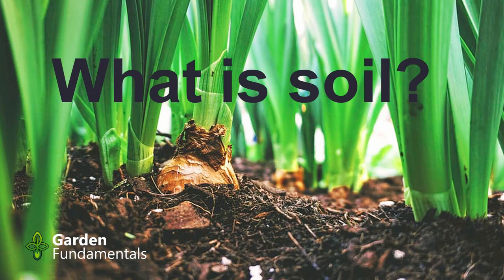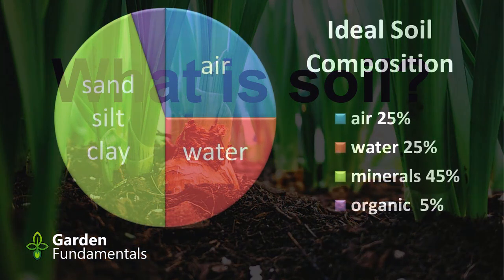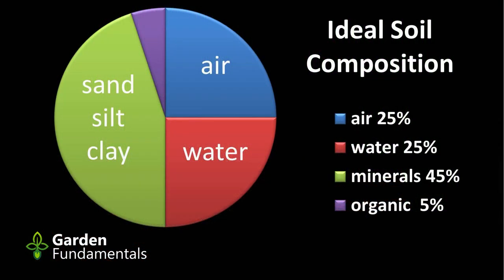What is soil? This represents ideal soil. It has 25% air, 25% water, 45% minerals — that's the sand, silt and clay material — and 5% organic matter.